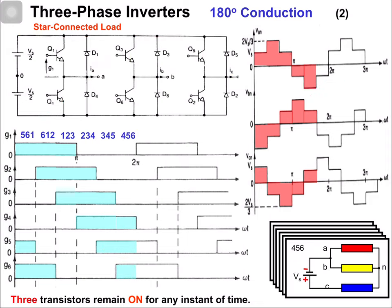In the last switching state, switches 4, 5, and 6 are in the on state. Because of switch 4, phase A is connected with the negative terminal. Because of switch 6, phase B is connected with the negative terminal. Therefore, phase C is connected with the positive terminal. From the voltages: van = -(1/3)Vs and vbn = -(1/3)Vs.